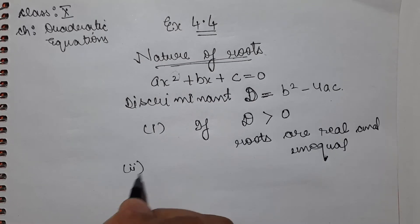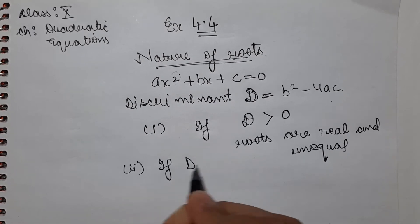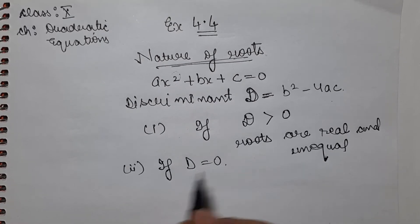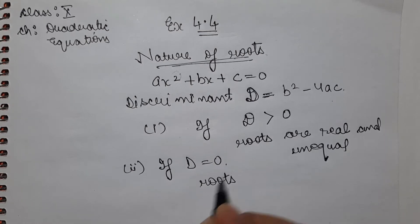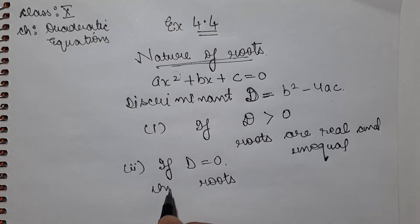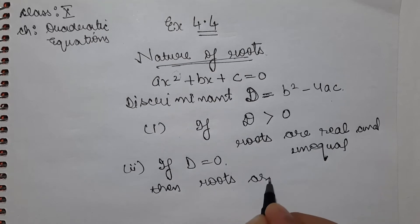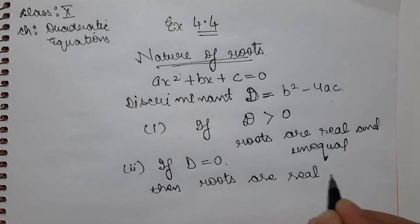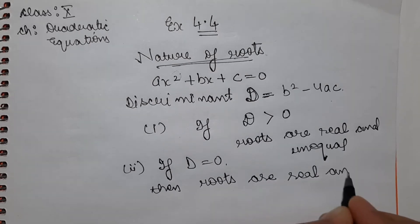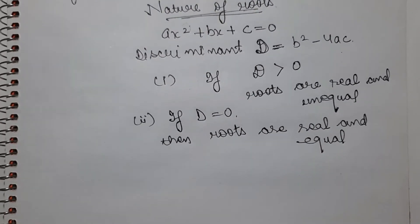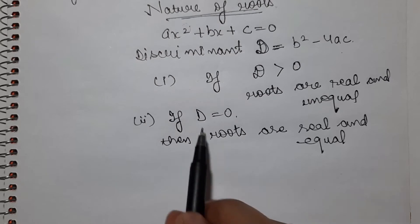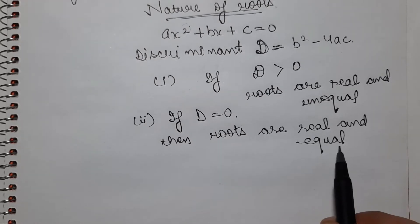The second situation: sometimes D will be equal to 0. If D is equal to 0, then roots are real and equal. Both roots will be equal — meaning if one root is 2, the other will also be 2. So if D equals 0, roots are real and equal.